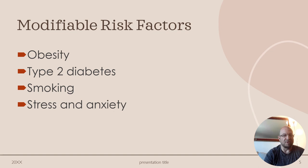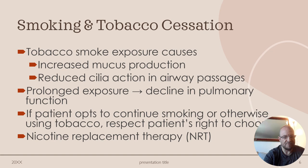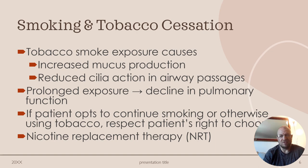A few modifiable risk factors include obesity, type 2 diabetes, smoking — probably the biggest one — and stress and anxiety. Smoking causes increased mucus production in the airways and reduced cilia action in airway passages. Prolonged exposure to smoke can cause decline in pulmonary function. If the patient opts to continue smoking, respect the patient's right to choose. Nicotine replacement therapy, like nicotine patches, can be offered.